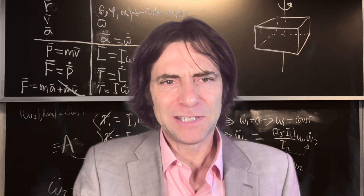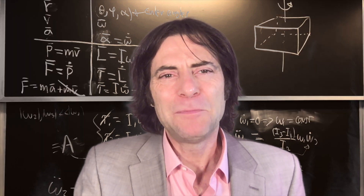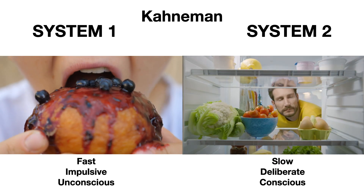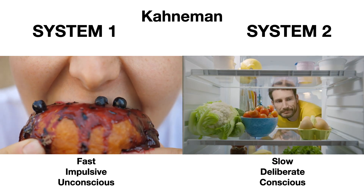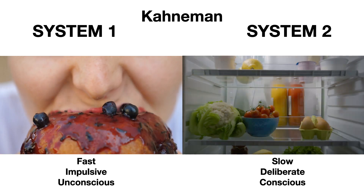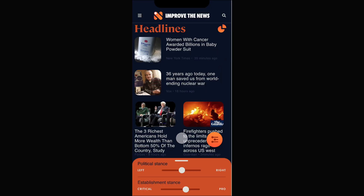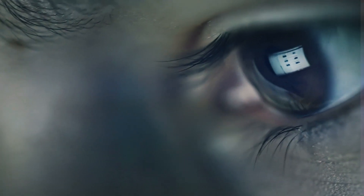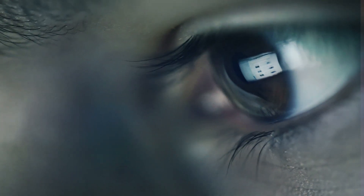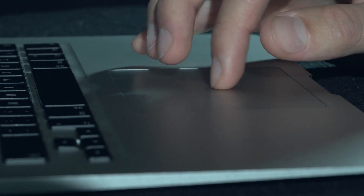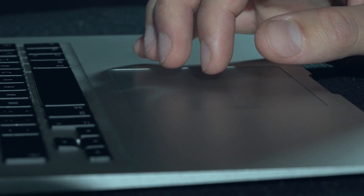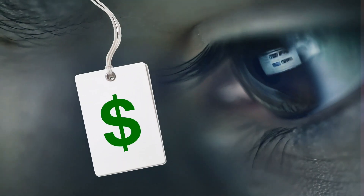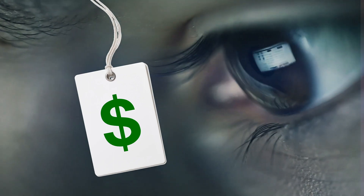So why is this useful for you? Improvethenews.org lets you choose your news diet the way you aim to choose your food — deliberately, not impulsively. This way, you'll read the news that are most important to you. Most other news sites instead focus on showing you whatever their algorithm thinks you'll impulse click on to maximize ad revenue. That's because they view your attention as their product to sell to their customers, their advertisers.